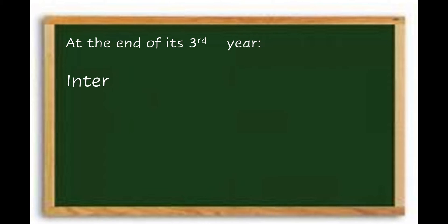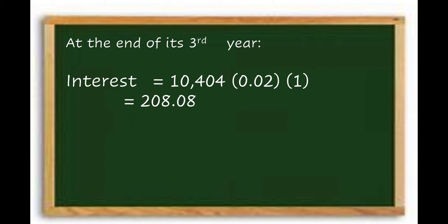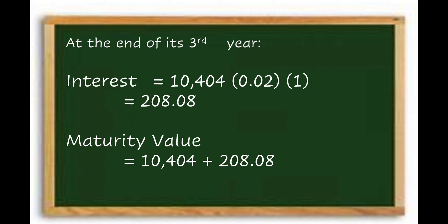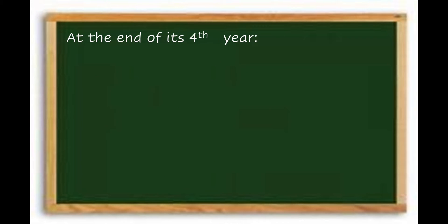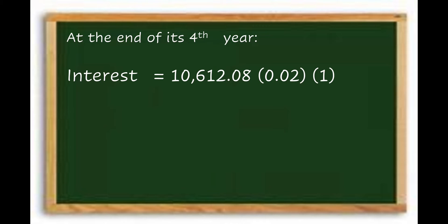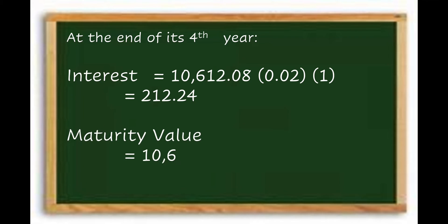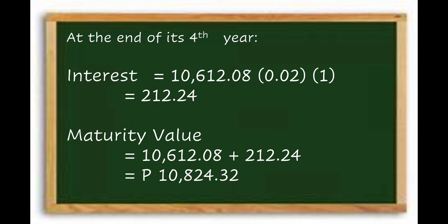At the end of the third year, the interest is ₱10,404 × 0.02 × 1 = ₱208.08. The maturity value is ₱10,404 + ₱208.08 = ₱10,612.08. At the end of the fourth year, the principal is ₱10,612.08. The interest is ₱10,612.08 × 0.02 × 1 = ₱212.24. The maturity value is ₱10,612.08 + ₱212.24 = ₱10,824.32.